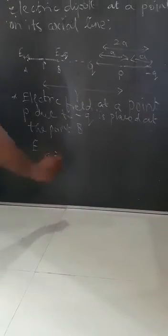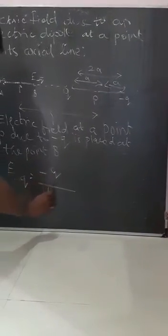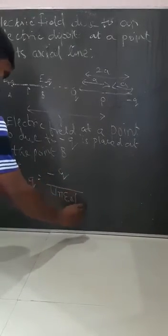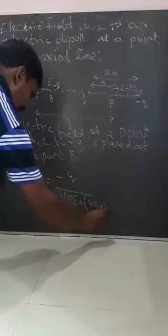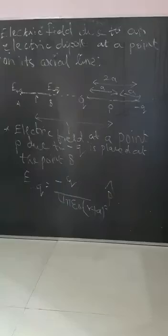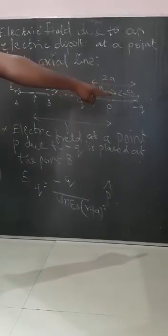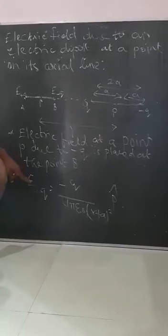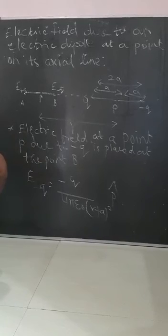So what is the equation for this? E minus Q is equal to minus Q by 4 pi epsilon naught, into R plus A the whole square into P cap. So this is the electric field at point P due to minus Q at the point B. You are getting this electric field equation, that is E minus Q is equal to minus Q by 4 pi epsilon naught, R plus A the whole square, P cap.